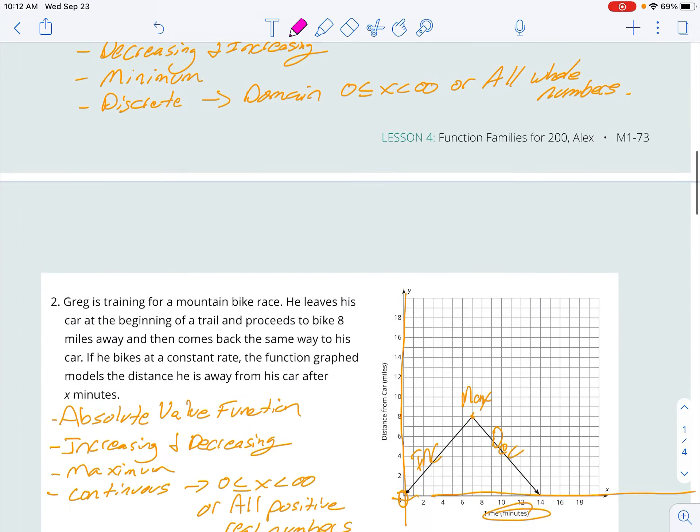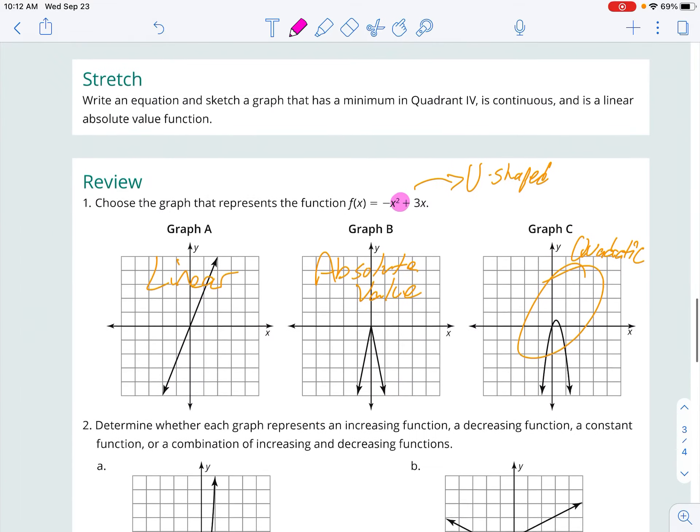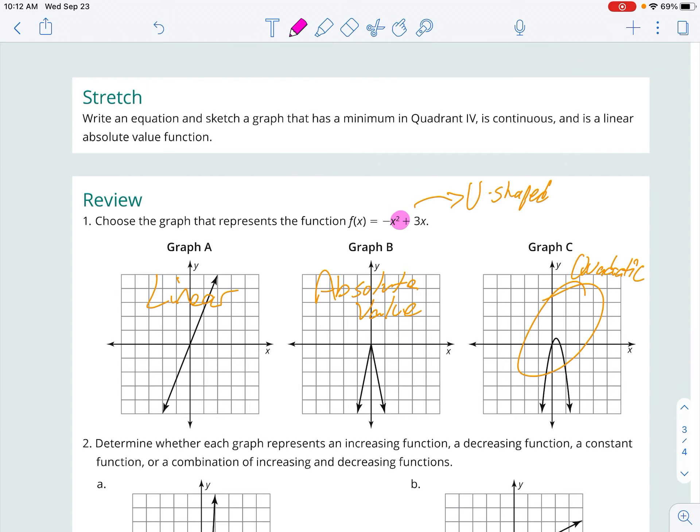We asked to do the stretch. So let me go find the stretch now. Write an equation and sketch a graph that has a minimum in quadrant 4, is continuous, and has an absolute value. So this is a little bit of gaming, playing around with the graphing calculator to see where I can get it to move into quadrant 4.